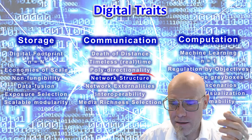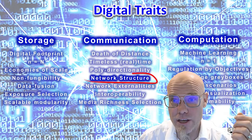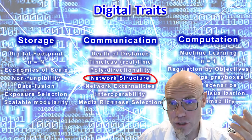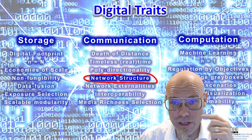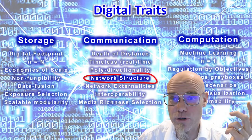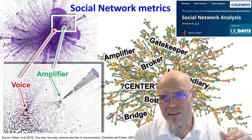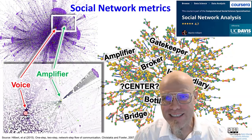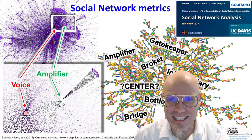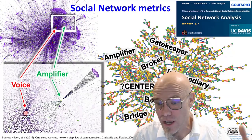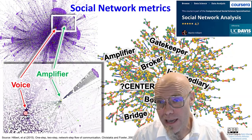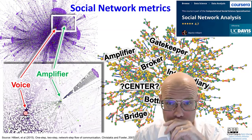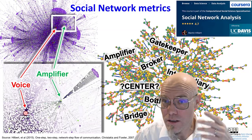For example, in communication, digital is building network structures, and that's very important. It doesn't go linear like an assembly line like in the industrial age — it's network. So we have to understand network lingo.